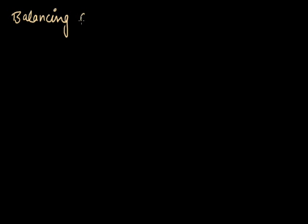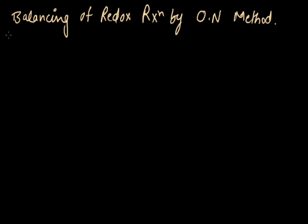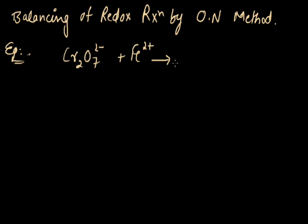We will discuss the balancing of redox reactions by the oxidation number method. We can take an example: Cr₂O₇²⁻ plus Fe²⁺ converts into Cr³⁺ plus Fe³⁺ plus H₂O.